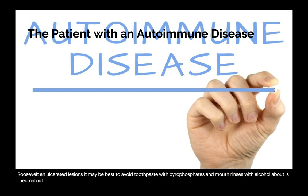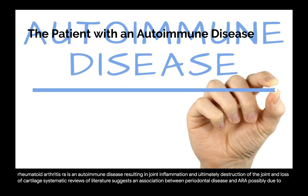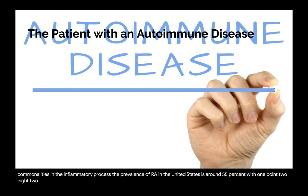Rheumatoid arthritis (RA) is an autoimmune disease resulting in joint inflammation and ultimately destruction of the joint and loss of cartilage. Systematic reviews suggest an association between periodontal disease and RA, possibly due to commonalities in the inflammatory process. The prevalence of RA in the United States is around 0.5–0.55%, with 1.28 to 1.36 million people affected, and it continues to increase.